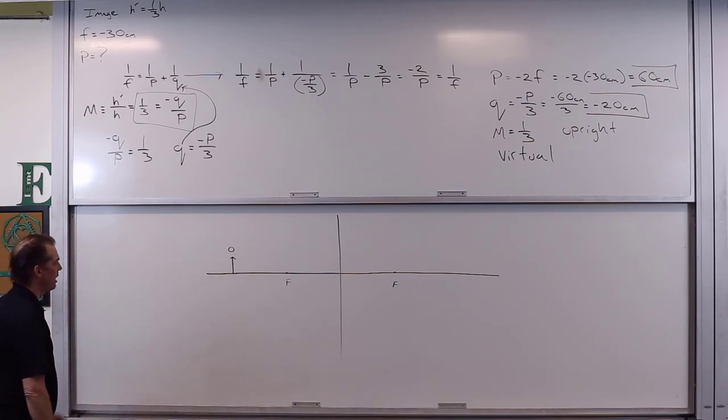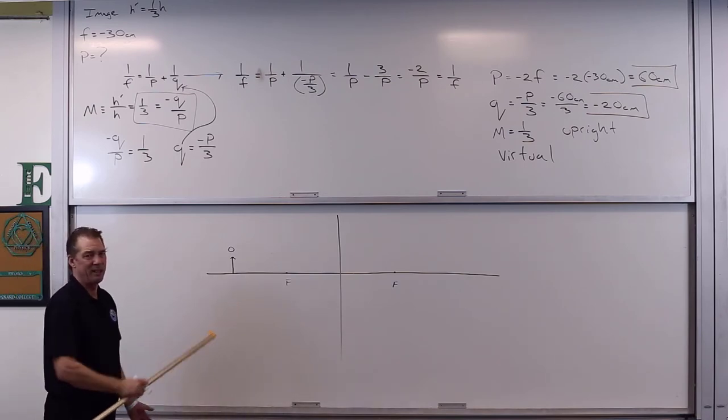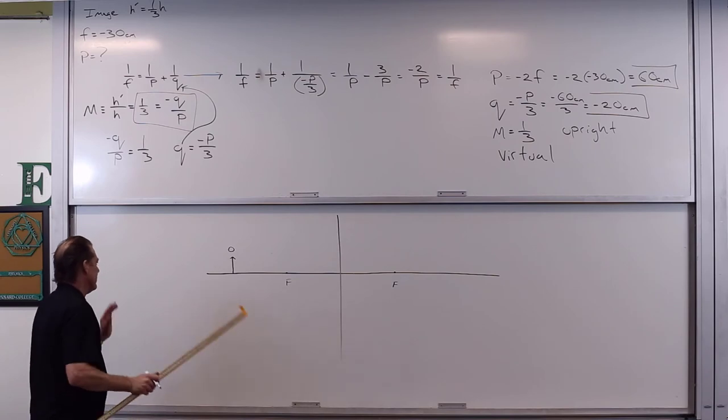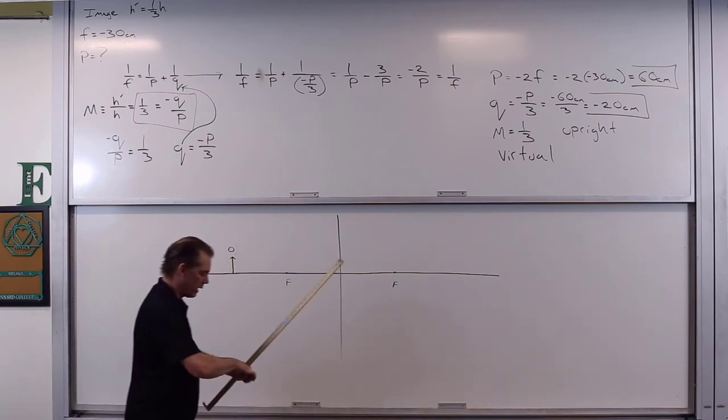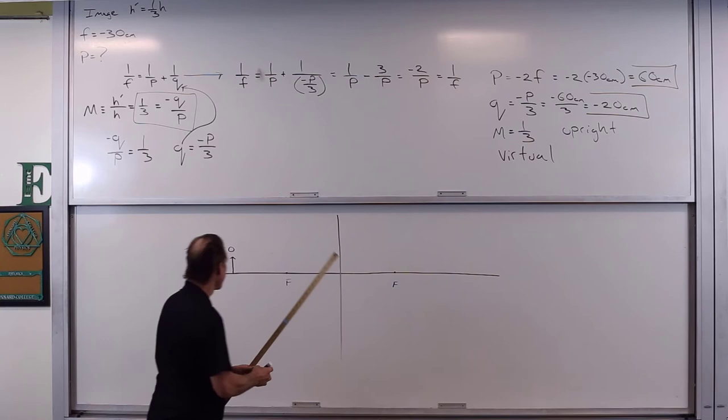We're going to end up getting a pretty small image, but I don't want to make the object too big, because then we kind of get distortions. Anyways, let's just go ahead and do this ray diagram. Shall we?